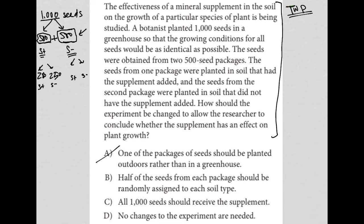Choice B: half of the seeds from each package should be randomly assigned to each soil type. I like that. That would look like the 250 idea — half of the seeds from each package assigned to each soil type. That's a good idea.